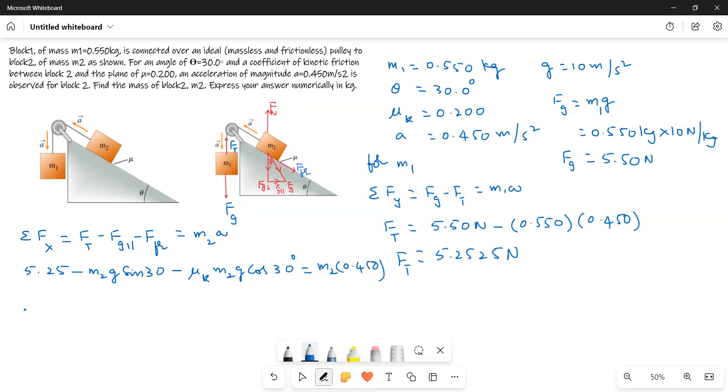Now, I will take all the quantities one side. Therefore, 5.25 is equal to M2g sin 30 degrees plus mu K M2g cos 30 degrees plus 0.45 M2.